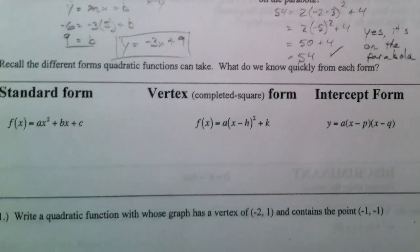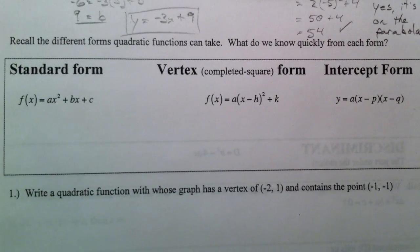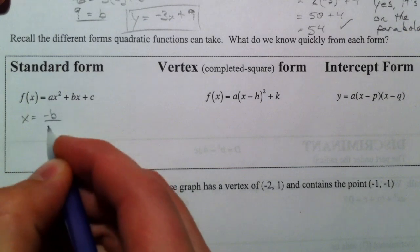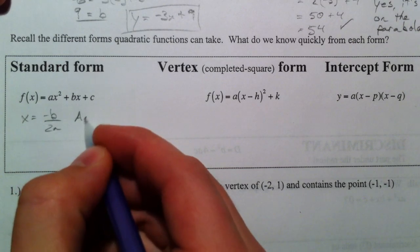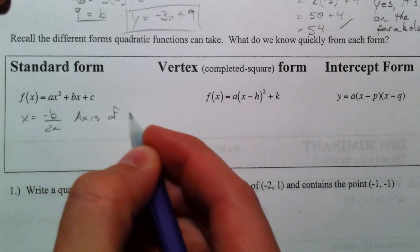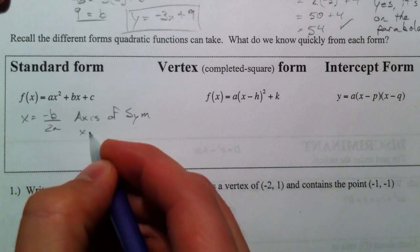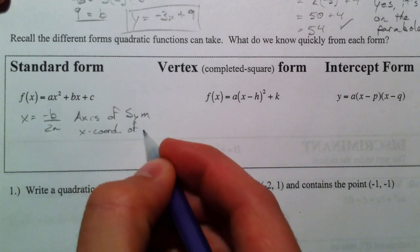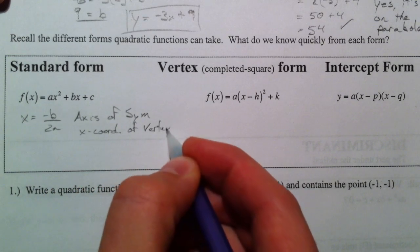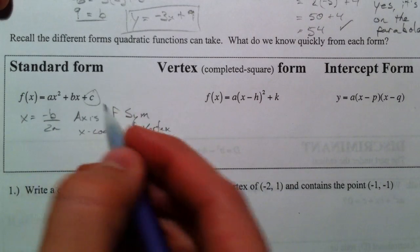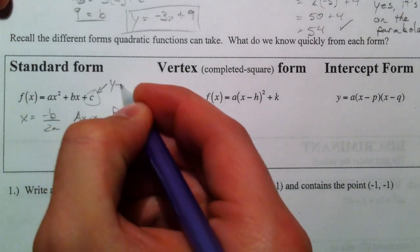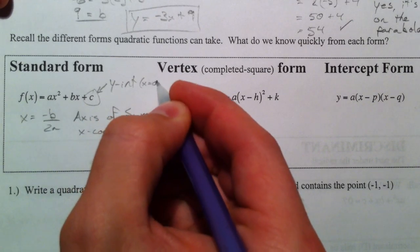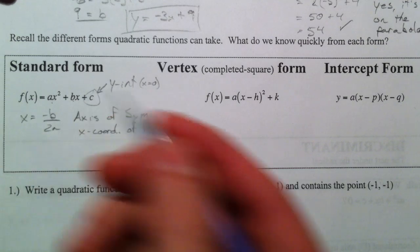It's nice to remember our different forms that we used. Remember that we used standard form, and this is where we used our negative b over 2a to find the axis of symmetry, or to find the x coordinate of our vertex, and then we plug it back in to find the vertex. C was always the y-intercept, because when you plugged in x equals 0, it was left over.